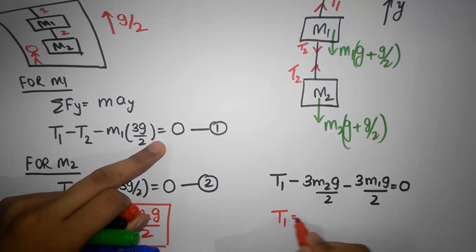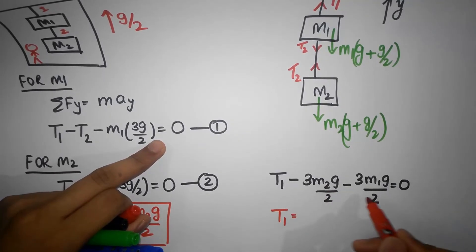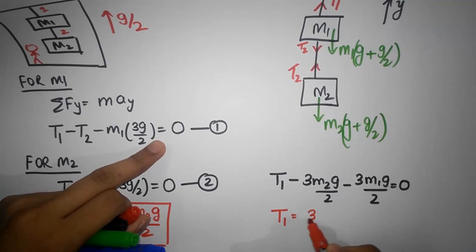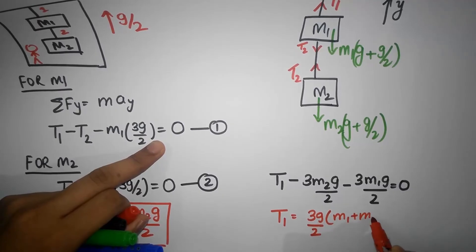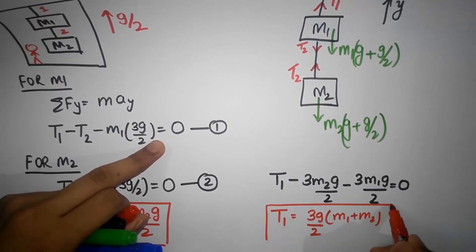So T1 is, I can take all the common stuff out, I can take 3g by 2 out, and then I get m1 plus m2. Tada!